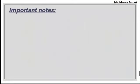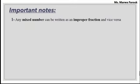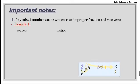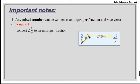Let's take some important notes. Any mixed number can be written as an improper fraction. Here we have two and one ninth, and this is a mixed number because we have a whole and a proper fraction, and I want to convert it into an improper fraction.